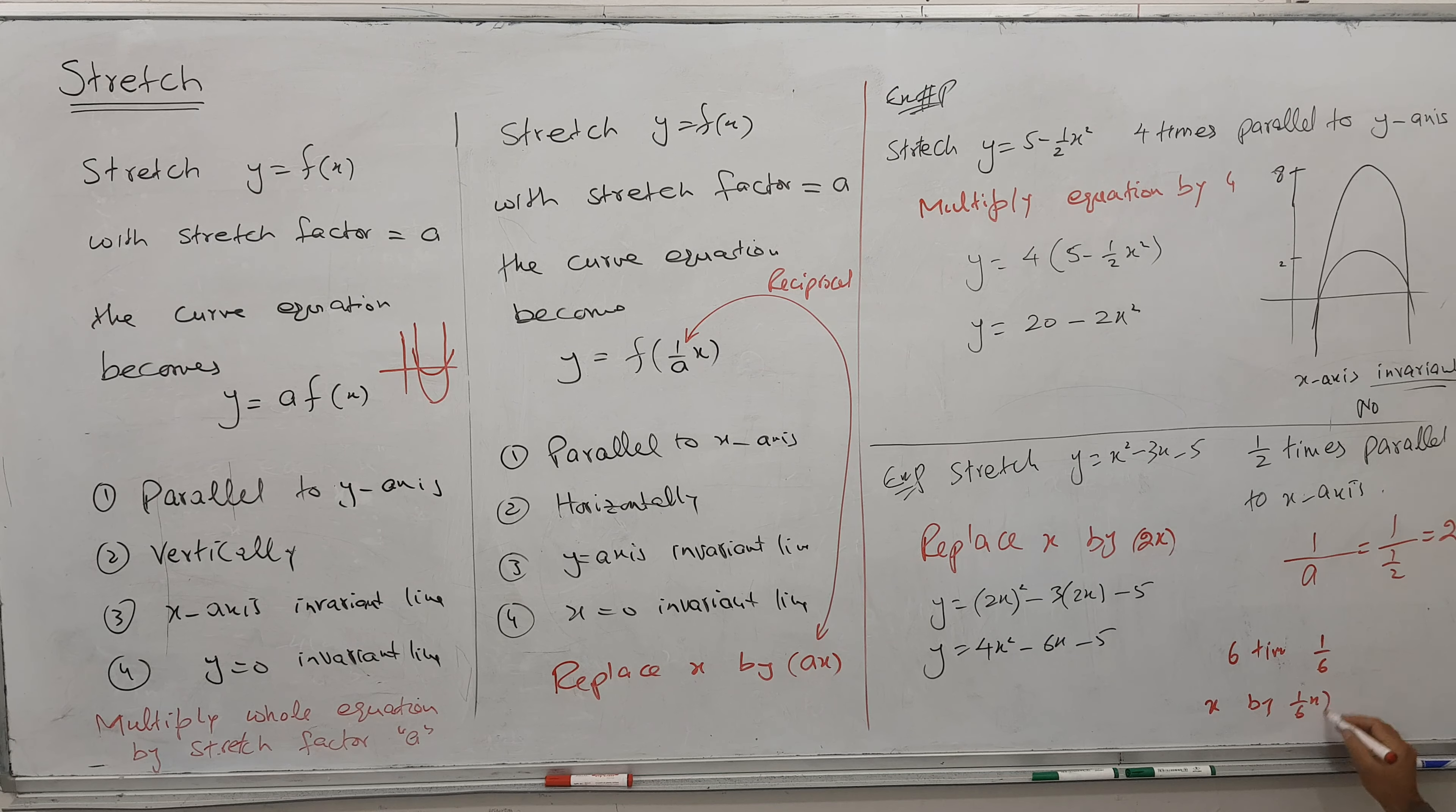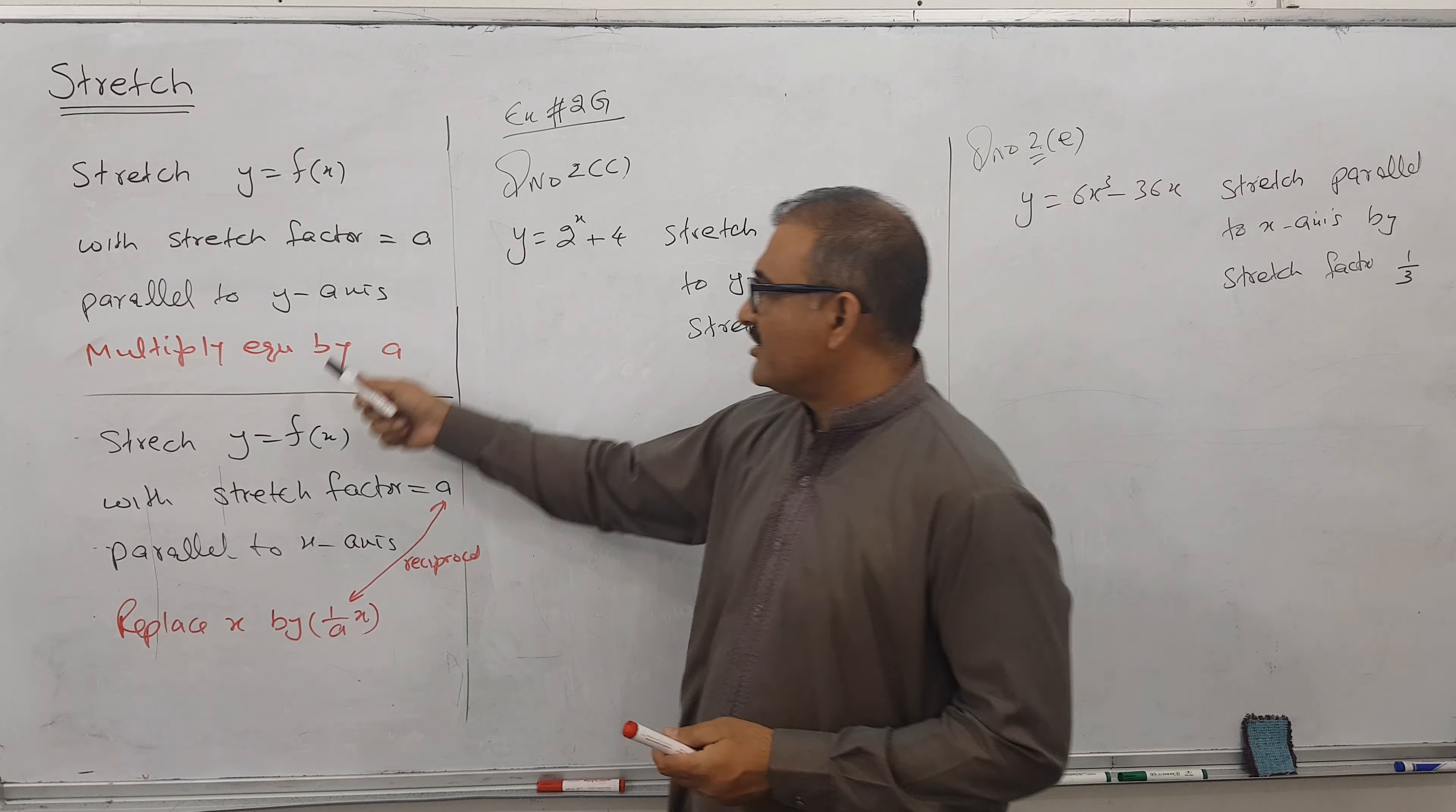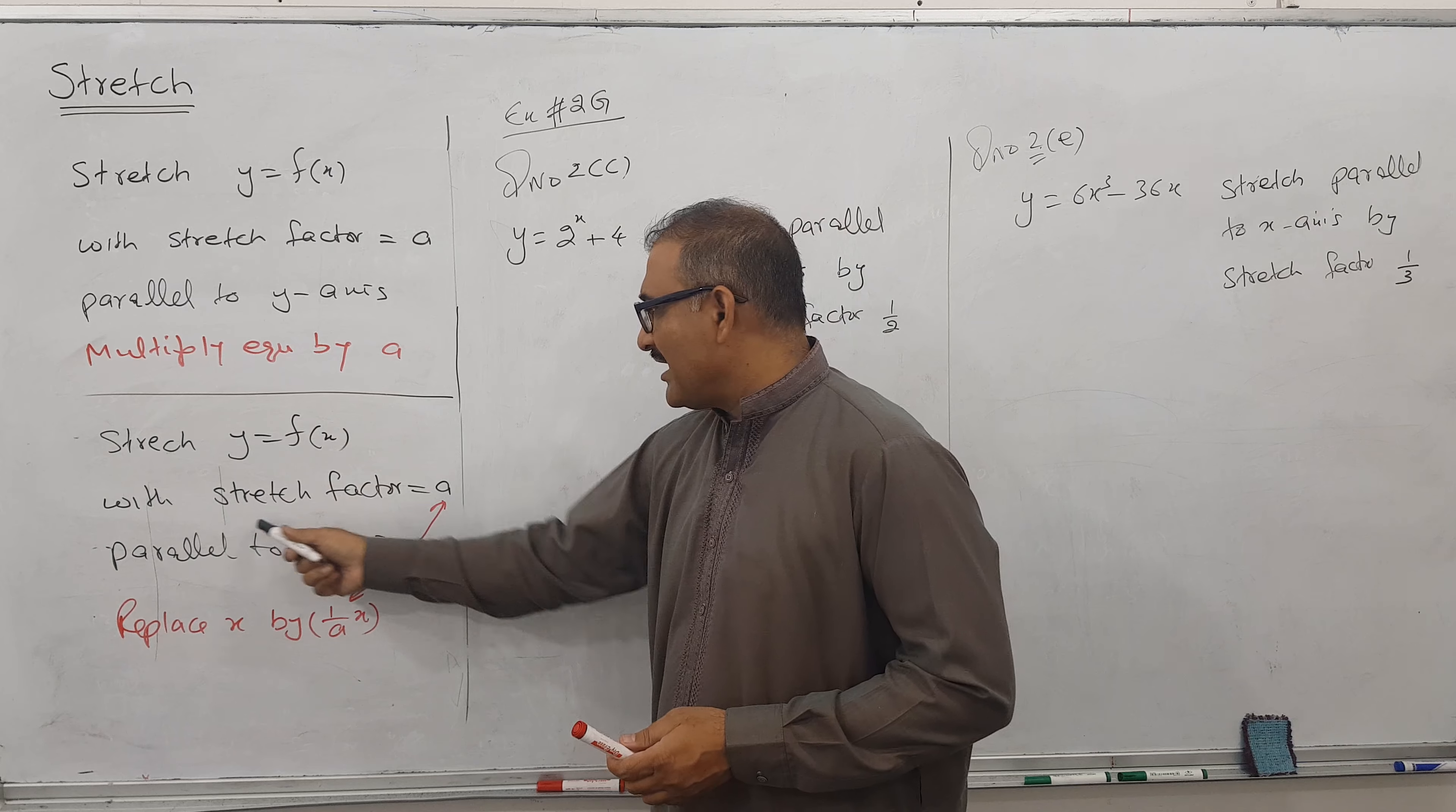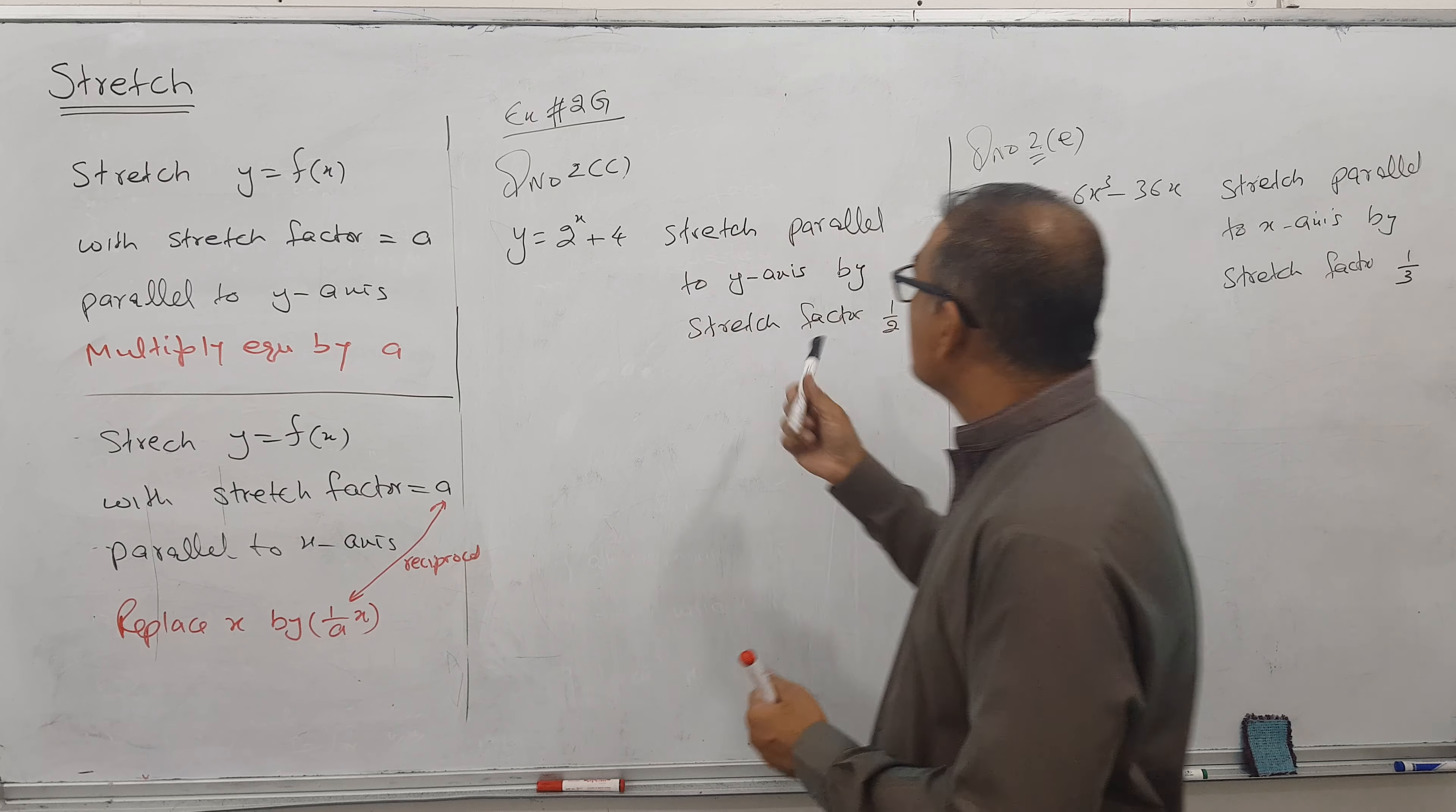So we have two examples here: 2c and 2e. So I wrote a shortcut here where there is parallel to y-axis, multiply by A. Parallel to x-axis, multiply by reciprocal, replace by reciprocal of A into x.